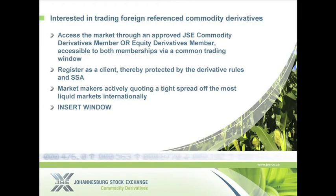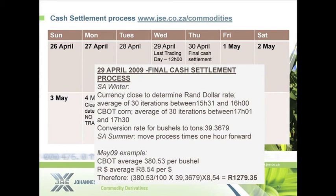Hopefully you've shown some interest in these products. How do you access them? The grain products are listed on the commodity derivative side, but we've recently introduced a common trading window between the agricultural commodity derivatives market and the equity derivative members. If you're registered with any of those members, you can simply phone your broker and ask them to open the dedicated global market window for instant access to these products. No need to sign up for separate client accounts if you're already an equity derivative client. In the trading window screenshot, you can see all the commodities being quoted — we're fortunate to have four market makers actively quoting, providing instant liquidity.